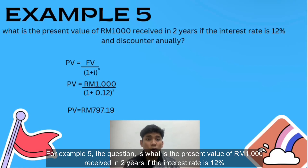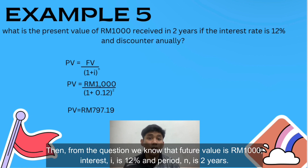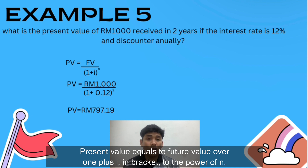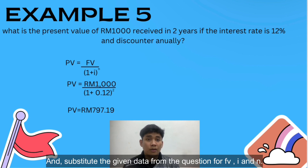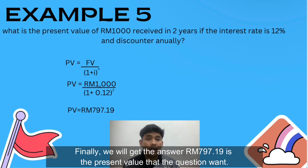Example five: what is the present value of RM1,000 received in two years if the interest rate is 12% compounded annually? From the question: future value is RM1,000, i is 12%, and n is 2 years. Using the formula PV equals FV over (1 plus i) to the power of n, and substituting the given values, we get a present value of RM797.70. That is the present value the question is asking for.